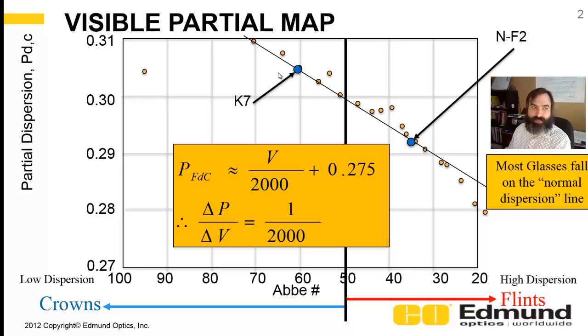Let's look at that on the visible glass chart, visible glass map. Abe in the horizontal and partial dispersion in the vertical. Here's K7, and here's NF2, and here's the line, this visible glass line for this particular definition. And again, the glass line is Abe divided by 2,000 plus 0.275, or the slope is 1 over 2,000.